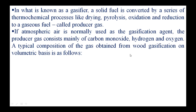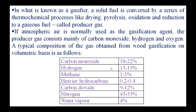A typical composition of gas obtained from wood gasification on a volumetric basis is as follows: carbon monoxide 18 to 22 percent, hydrogen 13 to 19 percent, methane 1 to 5 percent, heavier hydrocarbons 0.2 to 4 percent, carbon dioxide 9 to 12 percent, nitrogen 45 to 55 percent — since atmospheric air is used which has a higher nitrogen content — and water vapor 4 percent.